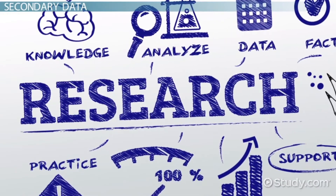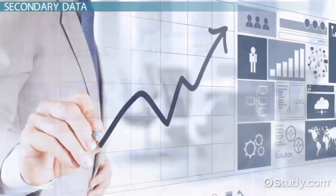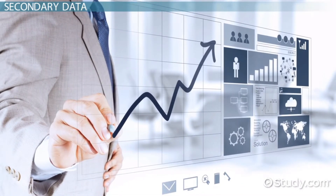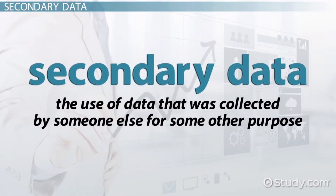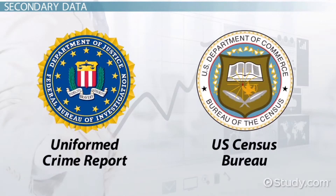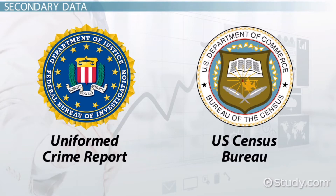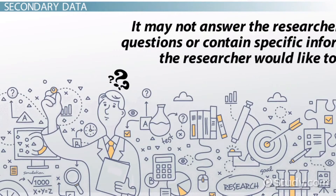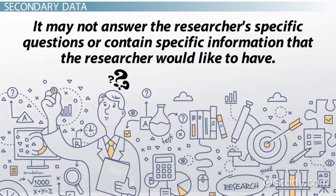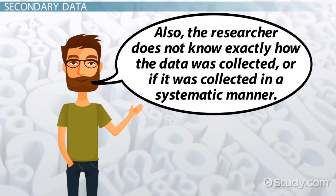Not all research requires that researchers collect their own data. Sometimes researchers analyze data already collected by others. Secondary data involves the use of data that was collected by someone else for some other purpose. The most widely used data are gathered by government agencies, such as the U.S. Census Bureau or the Uniformed Crime Report. One disadvantage is that secondary data may not answer the researcher's specific questions. Another disadvantage is that the researcher does not know exactly how the data was collected, or if it was collected in a systematic manner.